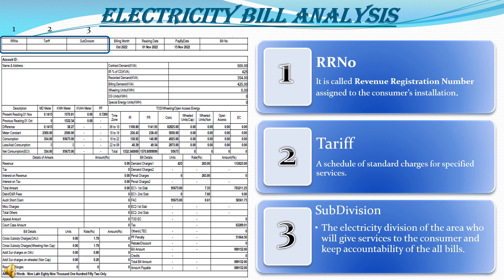In the left portion of the screen, I have included the electricity bill and highlighted a few terms: RR number, tariff and subdivision, marked as numbers 1, 2 and 3. Let's see one by one. The RR number — the full form is Revenue Registration Number, which is assigned to the consumer installation and assigned by the electricity supply company.